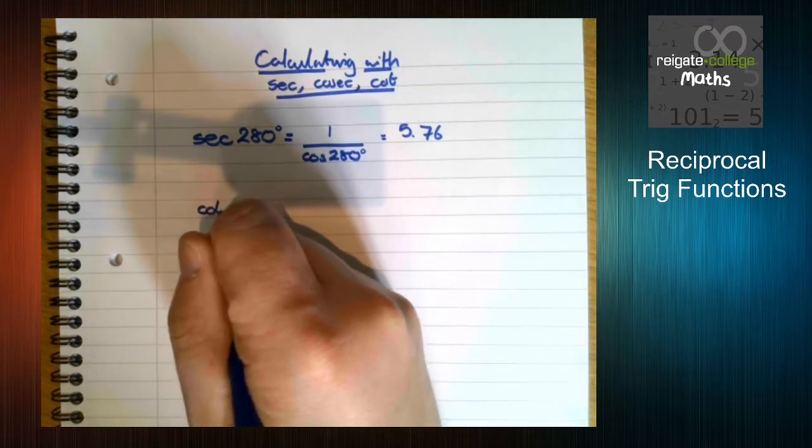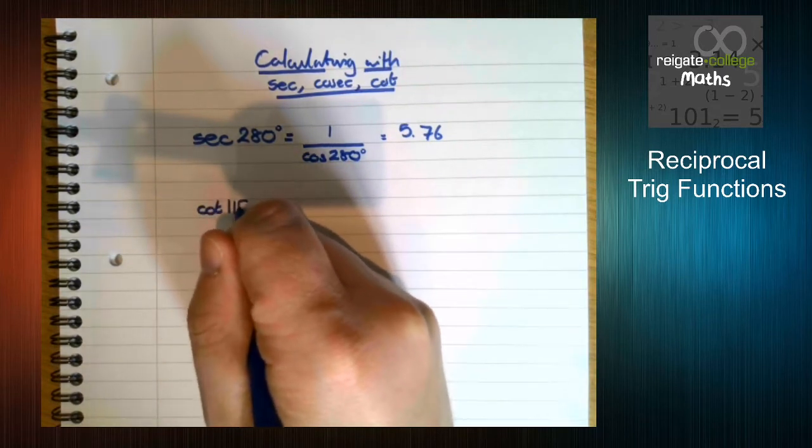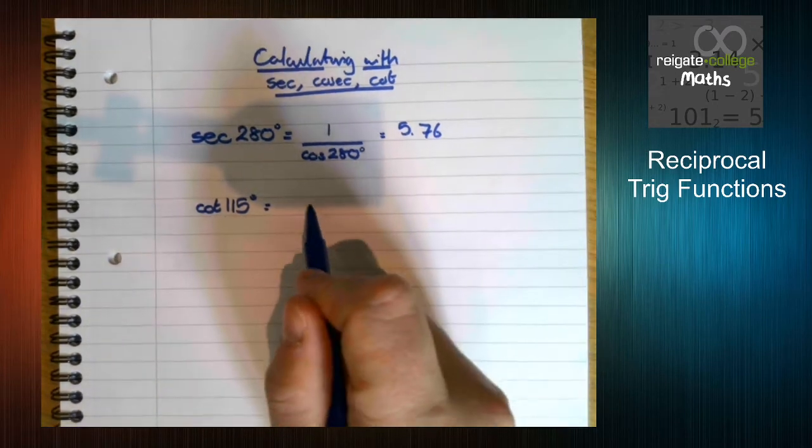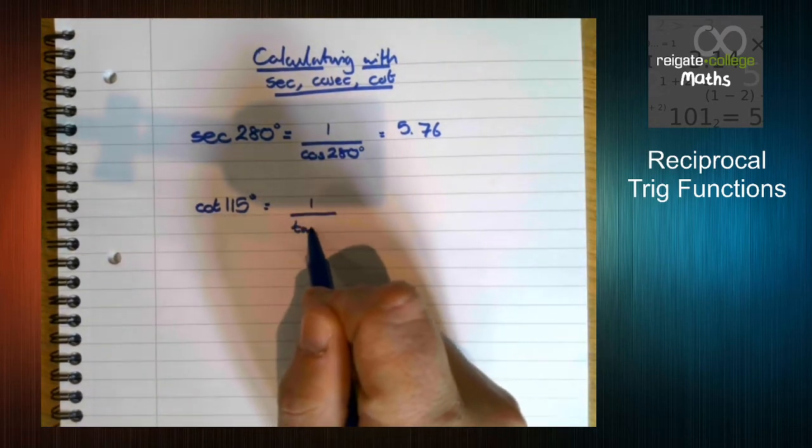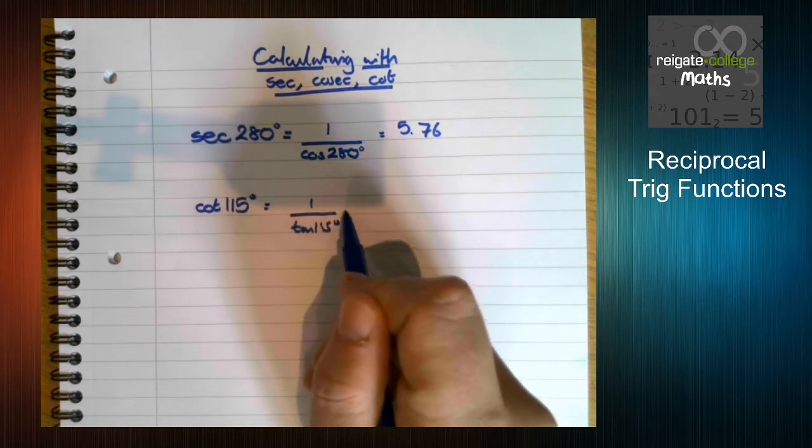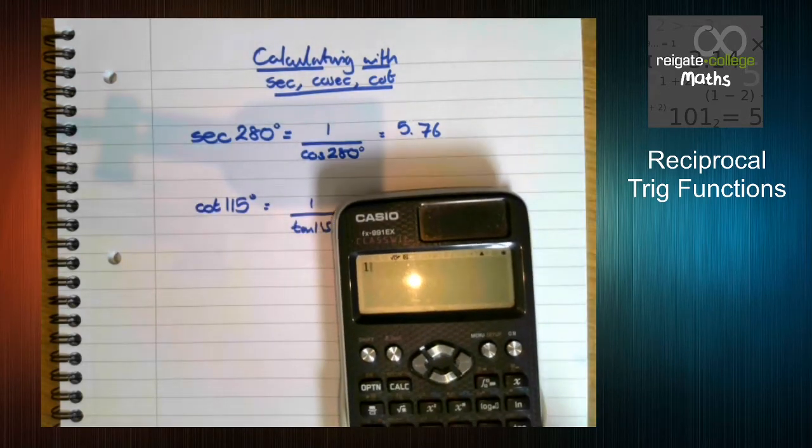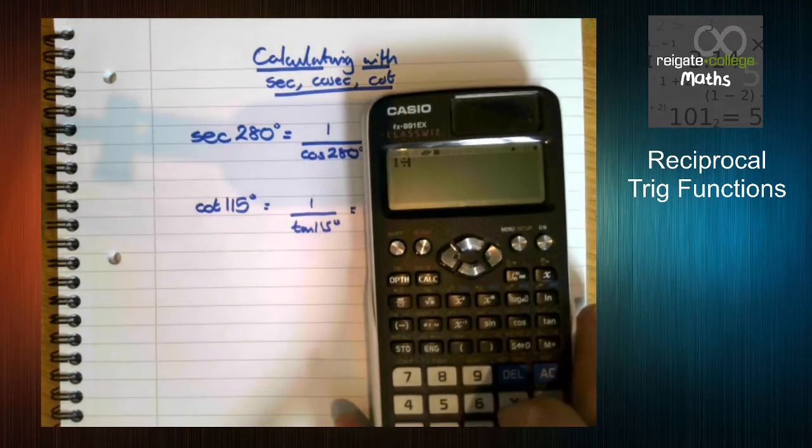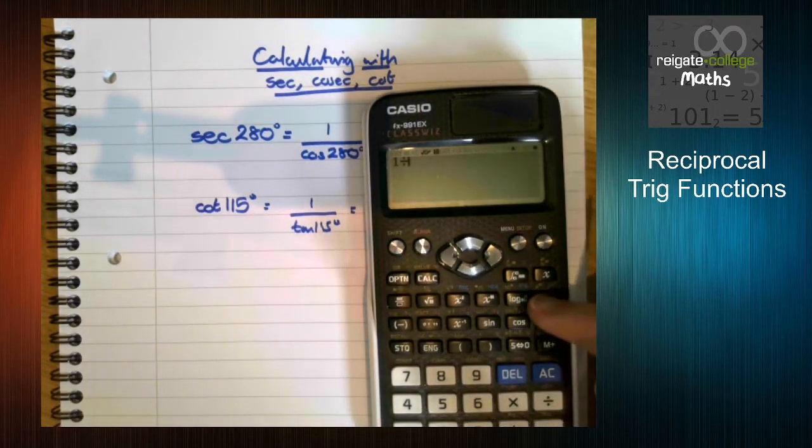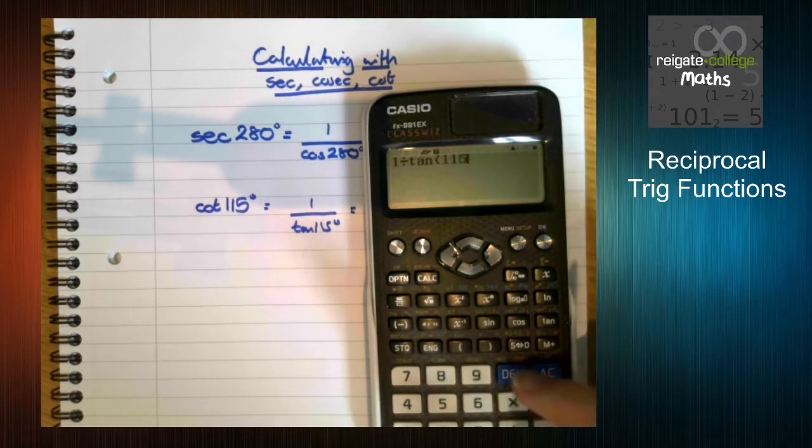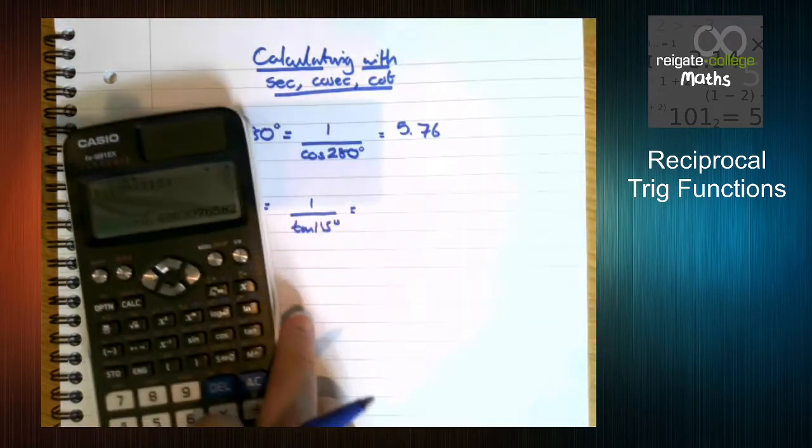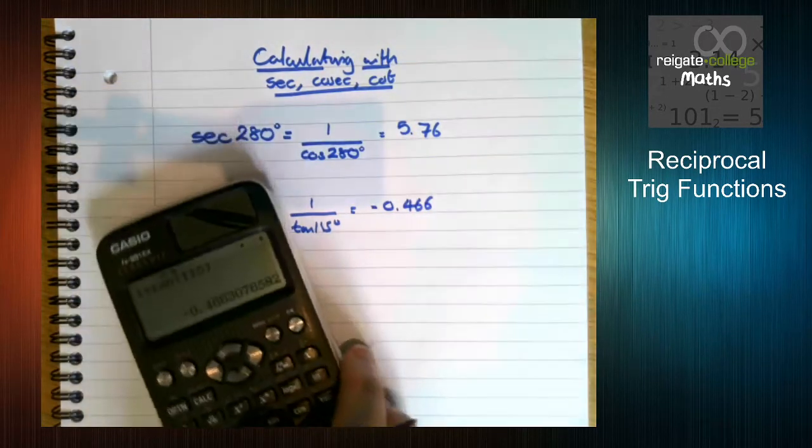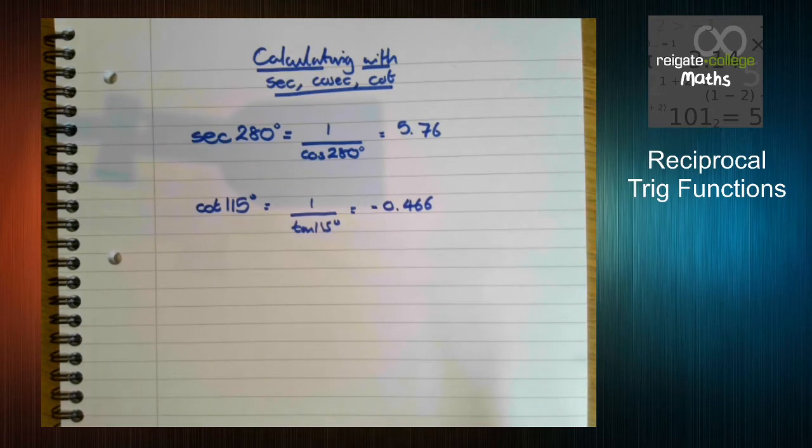But let's have a look at another. We want to work out cot of 115 degrees. Well, cot is 1 over tan. So in our calculator, we type in 1 over tan 115, and we get our answer there. Again giving our answer to 3 significant figures.